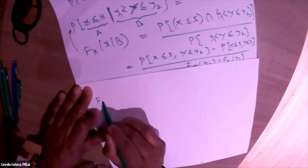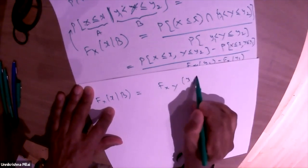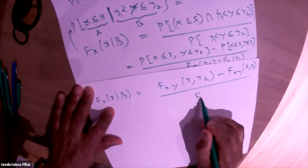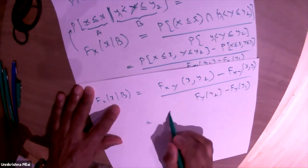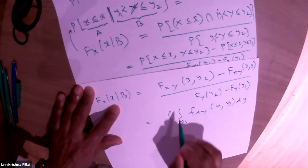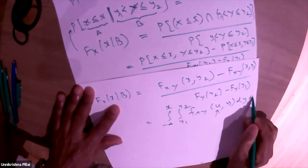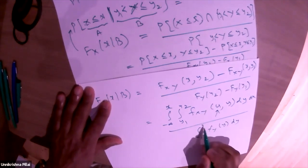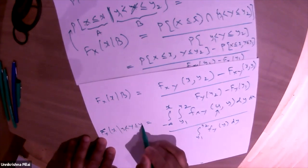We can write F_{X|B}(x) as the joint distribution function evaluated at (x, y₂) minus at (x, y₁), divided by F_Y(y₂) − F_Y(y₁). This can be written in terms of the joint density function: integrating f_{XY}(u, y) over u from −∞ to x and y from y₁ to y₂, divided by the area under f_Y from y₁ to y₂.